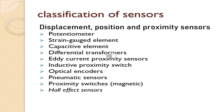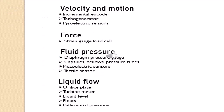Classification of sensors is very important. Types include displacement, position, and proximity sensors: potentiometer, strain gauge element, capacitive element, differential transformer, eddy current proximity sensor, inductive proximity switch, optical encoders, pneumatic sensors, proximity switches, and Hall effect sensors. Velocity and motion sensors include incremental encoder, tacho generator, and pyroelectric sensor. Force sensors include strain gauge and load cell. Fluid pressure sensors include diaphragm, pressure gauge, capsules, bellows, pressure tubes, piezoelectric sensor, and tactile sensor. Liquid flow sensors include orifice plate, turbine meter, liquid level indicator, floats, and differential pressure sensors.